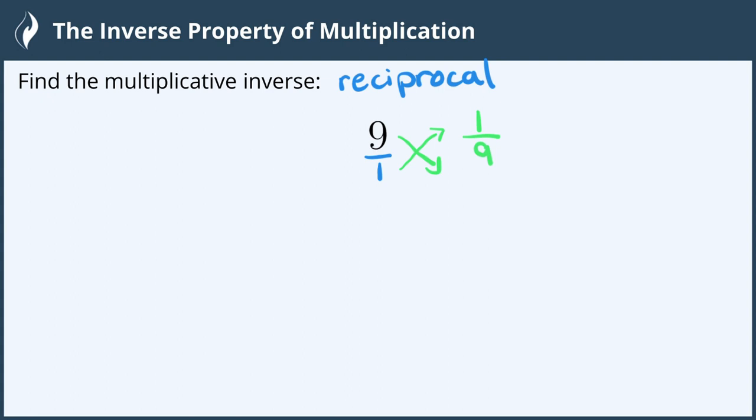To check and make sure that we got it correctly, if we multiply the original by what we decided was the multiplicative inverse and we get the multiplicative identity of 1, then it is indeed the multiplicative inverse.